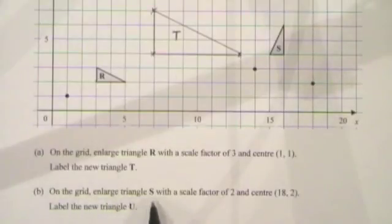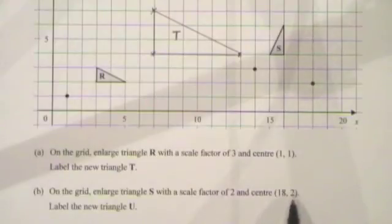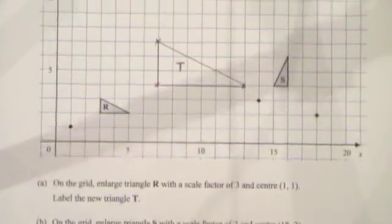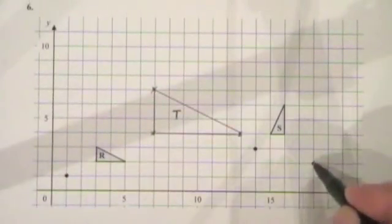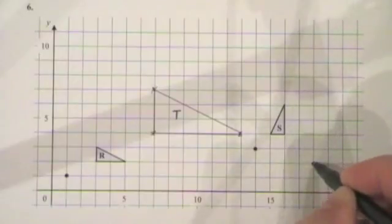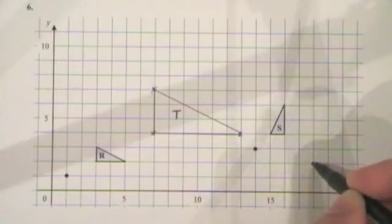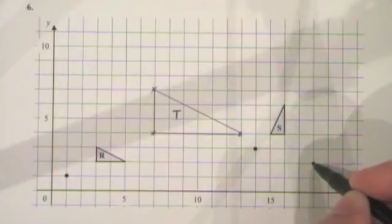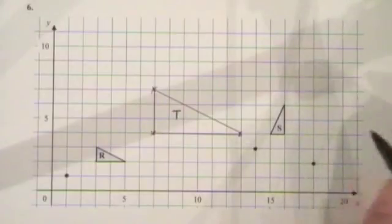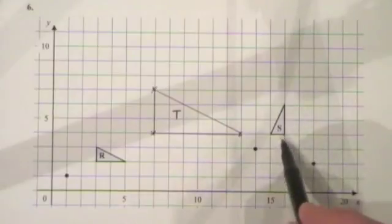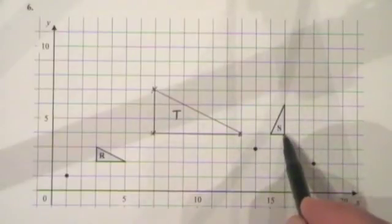Part B of this question says: on the grid, enlarge triangle S with a scale factor of 2 and a center of (18,2). The center is at (18,2) and the scale factor of 2 means everything is twice as far away from the center as it was to start with, and all the lengths are going to be twice as big.